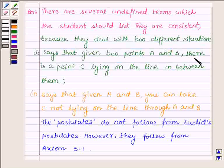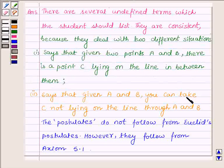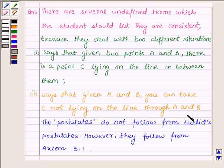that given two points A and B, there is a point C lying on the line in between them. And the second says, that given points A and B, you can take C not lying on the line through A and B.